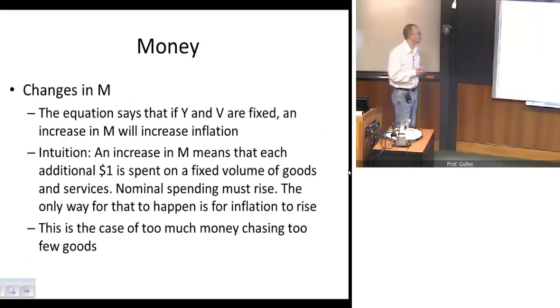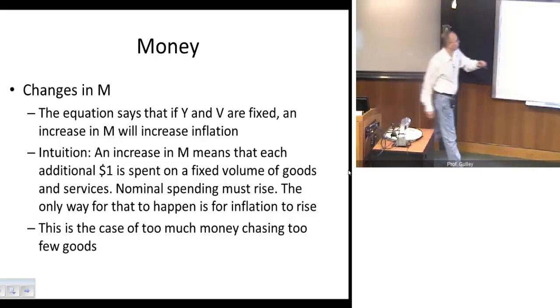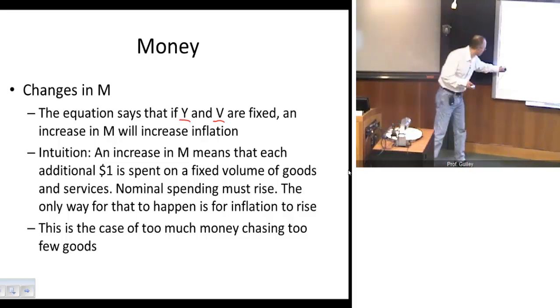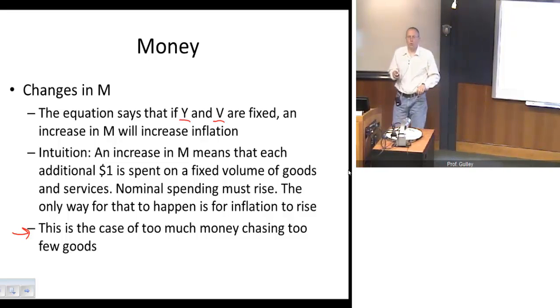And finally, changes in the money supply. Now if we hold real GDP and velocity fixed, the equation says an increase in the money supply will be associated with higher inflation. Intuition here is very straightforward. We have a fixed volume of goods, but an increased quantity of money to be spent on that fixed volume of goods. So now, literally, we have too much money chasing too few goods. And so money now becomes relatively less scarce. It becomes very plentiful relative to the volume of goods and services it can buy. And as a result, each dollar becomes worth less. And when each dollar becomes worth less, its purchasing power falls, and that, by definition, is inflation.